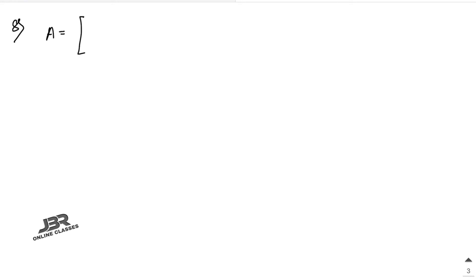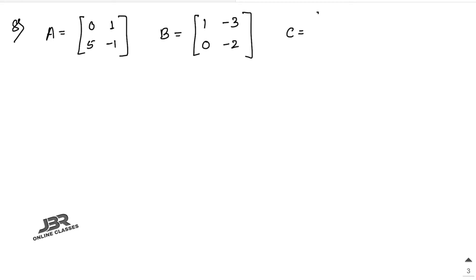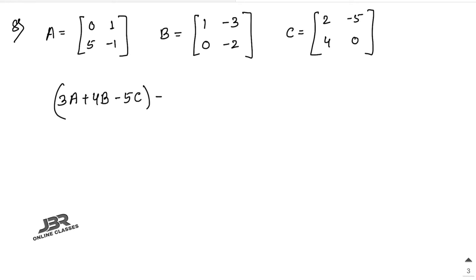Sum number 8: A is [0, 1, 5, -1], B is [1, -3, 0, -2], C is [2, -5, 4, 0]. Find 3A + 4B - 5C. Write 3A: [0, 3, 15, -3]. Write 4B: [4, -12, 0, -8]. Write -5C: [-10, 25, -20, 0].